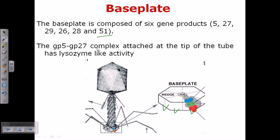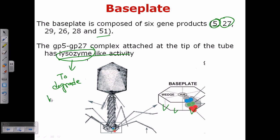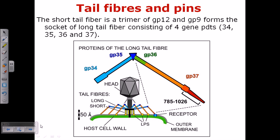Importantly, gp5 and gp27 form a complex attached to the tip of the tube. This complex has lysozyme-like activity, which is important for degrading the host cell wall to facilitate DNA injection.